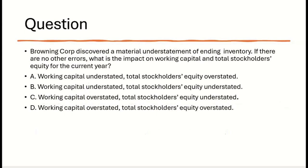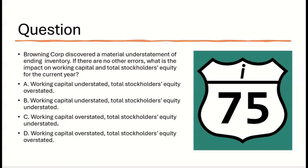Let's try this: Browning Corp discovered a material understatement of ending inventory. If there are no other errors, what is the impact on working capital and total stockholders' equity for the current year? Options: A — working capital understated, stockholders' equity overstated; B — both understated; C — working capital overstated, stockholders' equity understated; D — both overstated. If you think you know, leave the answer in the comments or community section.